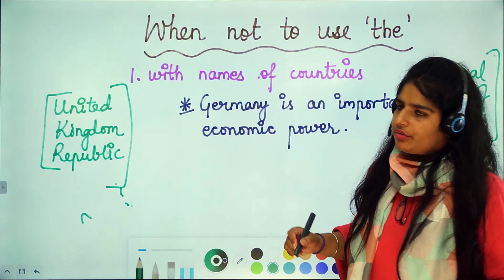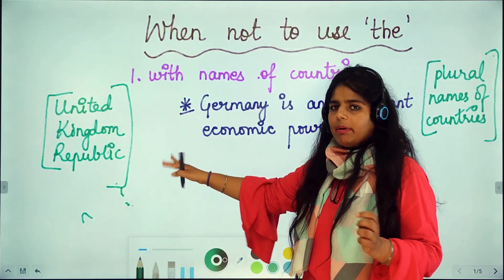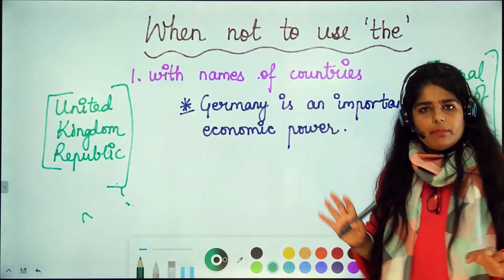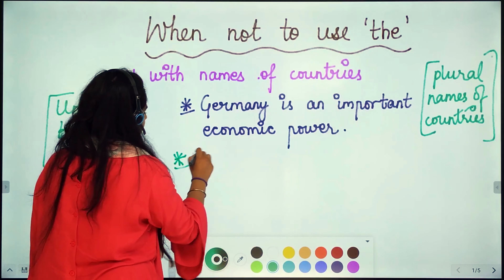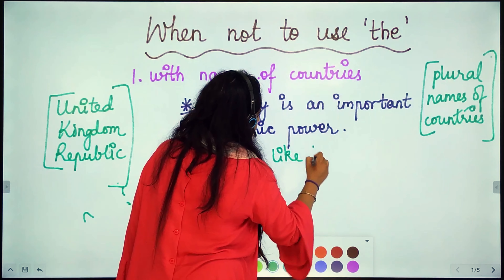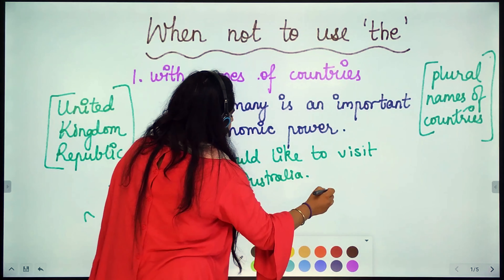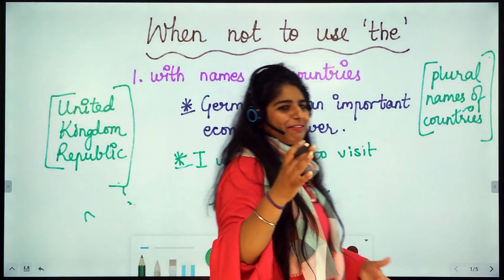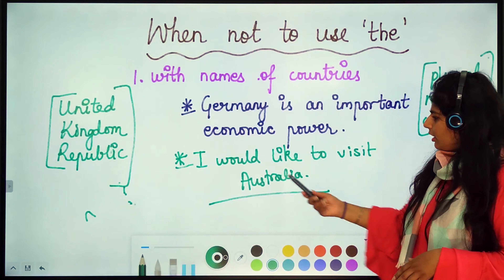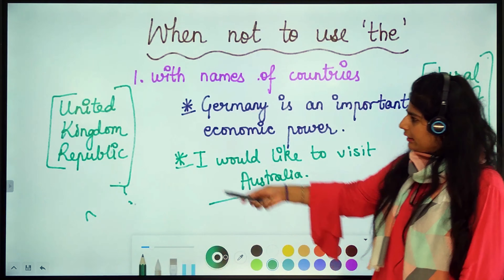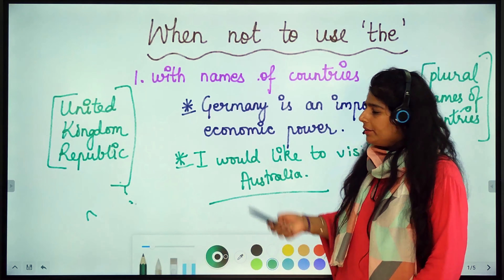For example: 'Germany is an important economic power.' I have not put 'the' here because there is no 'United Kingdom' or 'Republic' in its name, and similarly it is not a plural country name. Another example: 'I would like to visit Australia.' I have not used 'the' because Australia is neither a plural country name nor does it contain 'United Kingdom' or 'Republic.' Remember these two exceptions for using 'the' with country names.